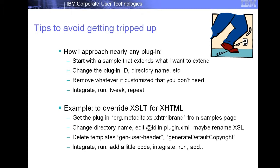To start with any plugin, grab a sample that does something similar to what you want. If you want to override XHTML, get a plugin that overrides XHTML. Open the plugin.xml and change the ID — don't forget to change the ID. You may want to rename the override file and strip out the code. At that point you have a plugin that is essentially a no-op — it integrates but doesn't do anything. Run it, make sure you haven't broken anything, then start adding a little bit of code. XSLT is programming, but having spent so long with it — including having XSLT dreams — it becomes second nature.